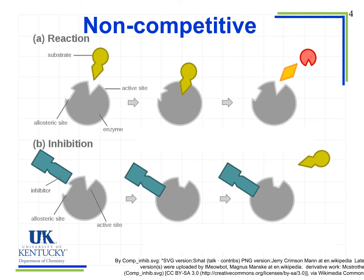Now we're going to look at a non-competitive inhibitor. Again at the top we see our basic reaction — our enzyme reacting with the substrate at the active site, forming our enzyme-substrate complex, and then forming the enzyme and products. Notice there's also a new site noted on the drawing called the allosteric site. This is some other site on the molecule. All enzymes have these allosteric sites — we haven't pointed them out before because it hasn't been relevant. The allosteric site is a place on the molecule where things other than the substrate can interact with the enzyme.